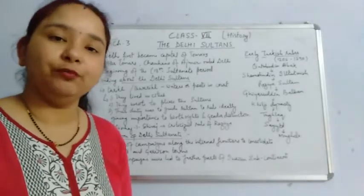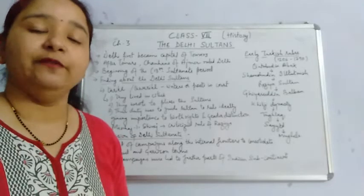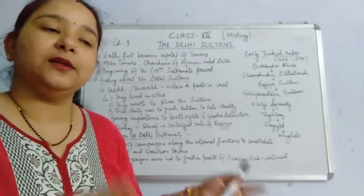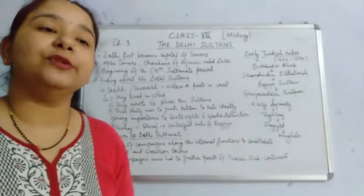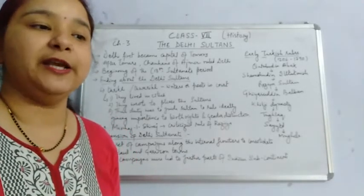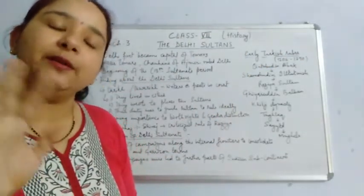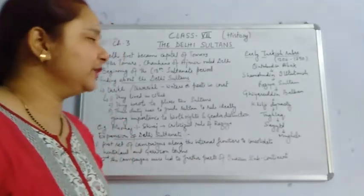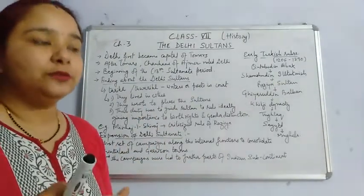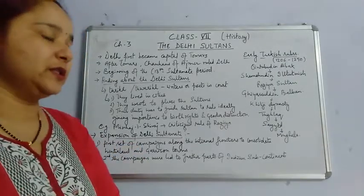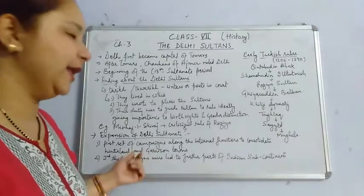Sometimes the distances were so large and communication so poor that the king thought he was ruling, but actually it was the governor or minister who was ruling. These were the problems that came with governing large territories from a garrison town. The first set of campaigns were started to consolidate the internal frontiers of the garrison town and its hinterland — to bring the adjacent areas firmly under administration.